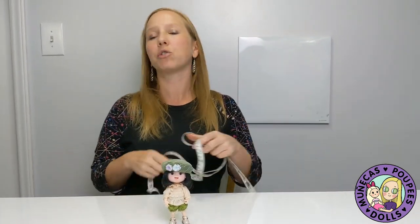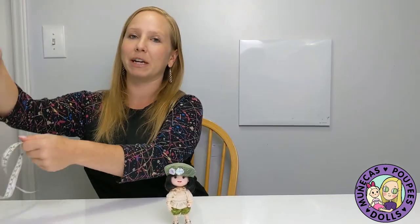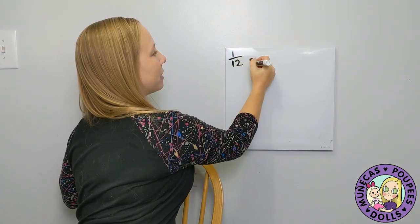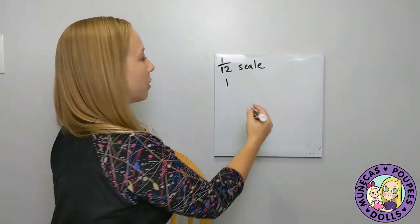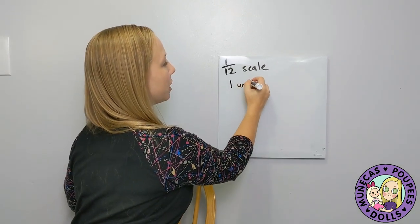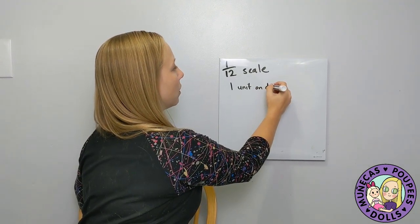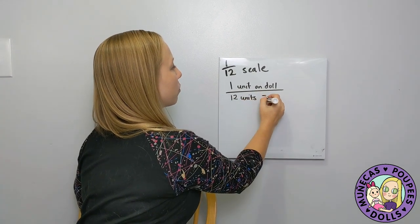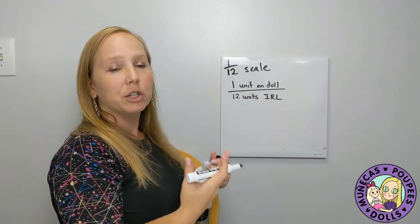Now let's figure out how tall she'd be as a real little girl — a math lesson! I used to be a math teacher, so this is exciting for me. A 1/12th scale means that for every one unit on the doll, it equals 12 units in real life.